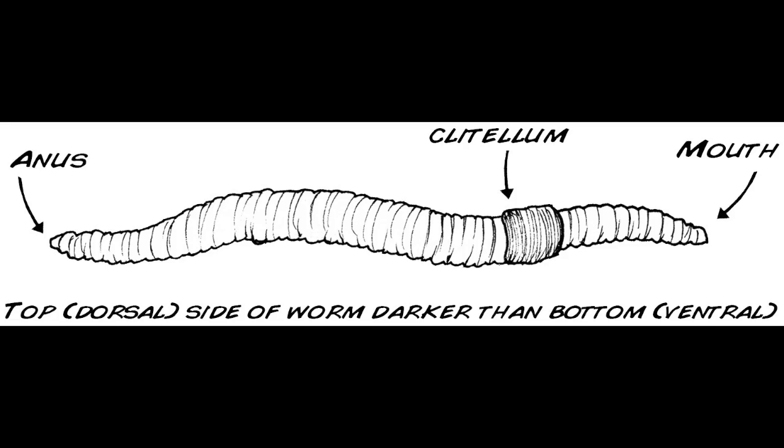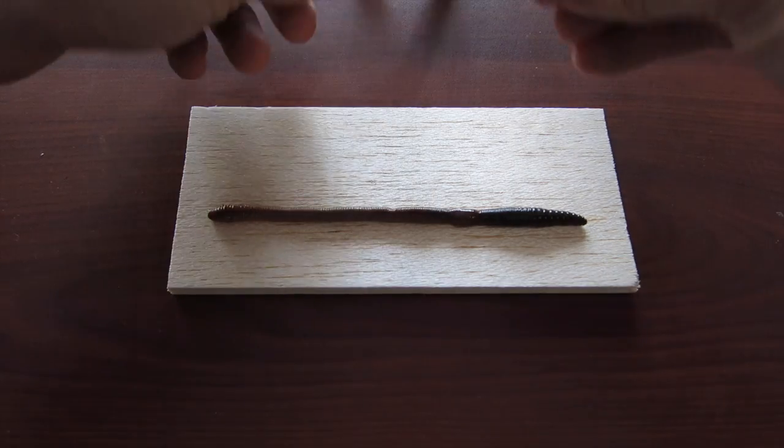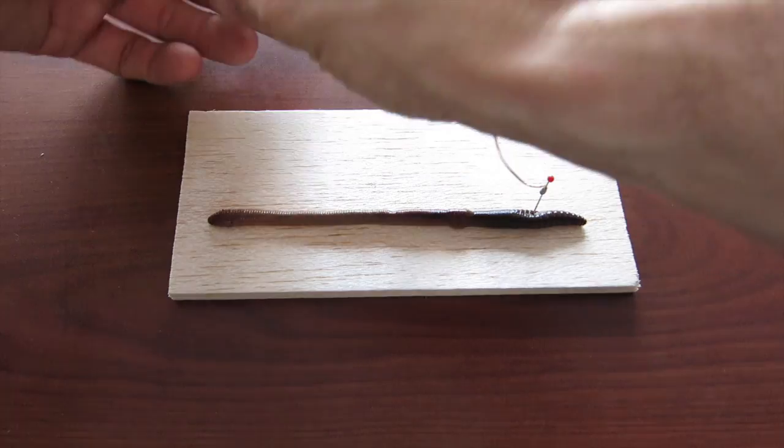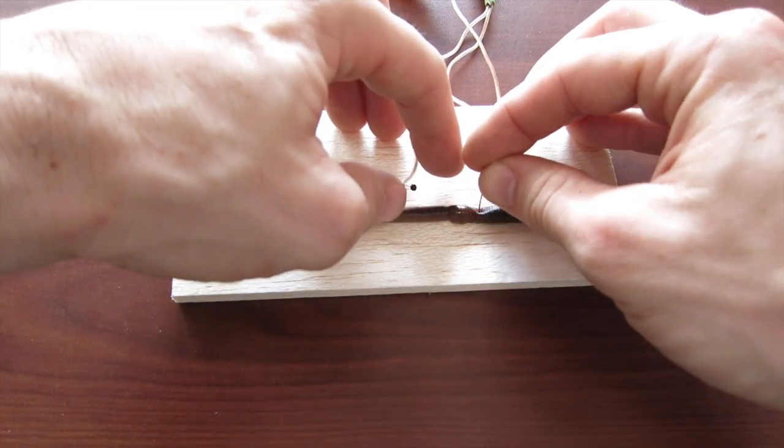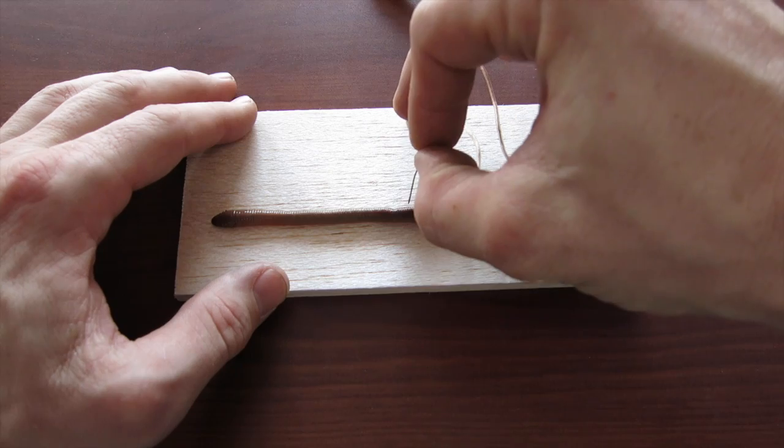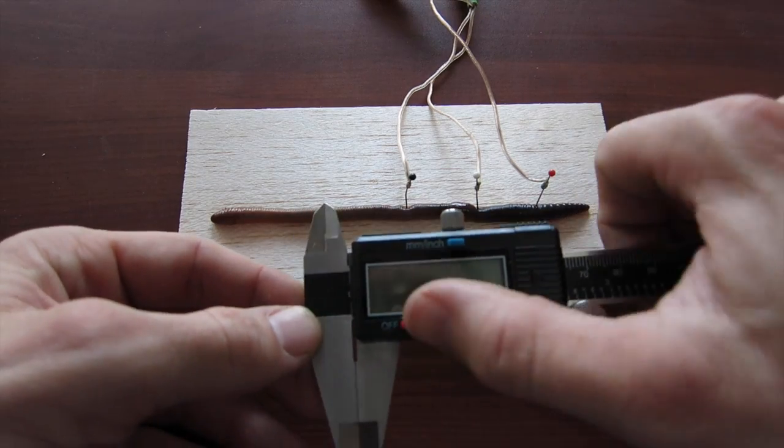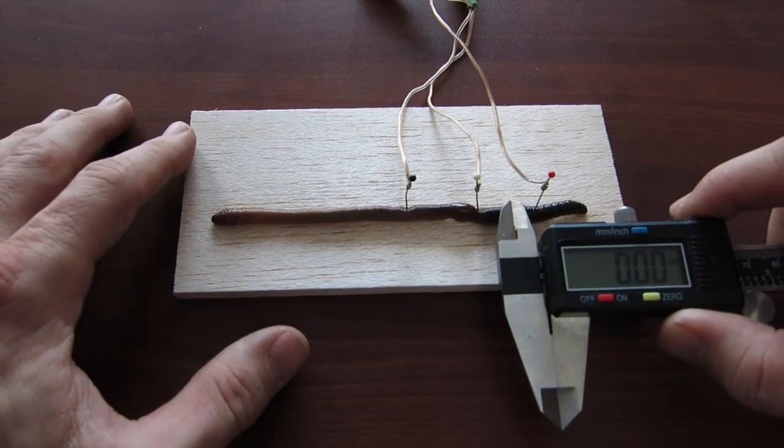We will use the medial giant nerve system for this experiment. Thus, place electrode 1 red close to the mouth, electrode 2 white some distance away, and ground black further away. With your digital vernier calipers, measure the distance between the red and white electrodes, channel 1 and channel 2.